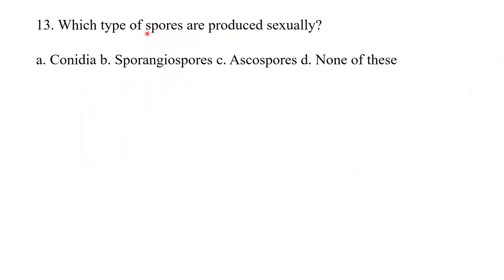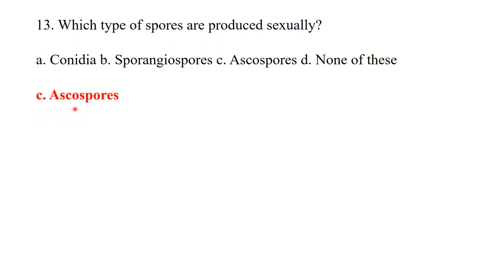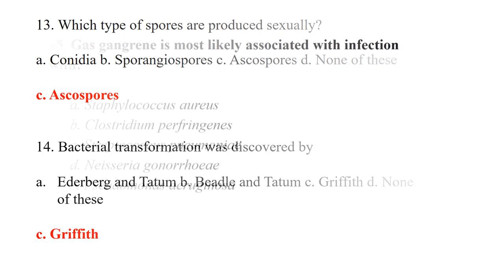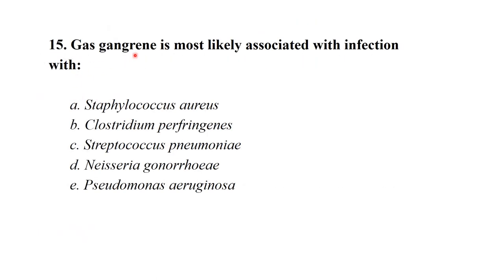Which type of spores are produced asexually? All others produce sexually. The best answer is ascospores — these are produced sexually. Bacterial transformation was discovered by Griffith. Gas gangrene is most likely associated with Clostridium perfringens, option B.